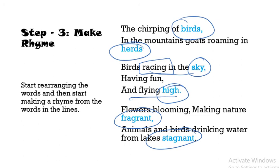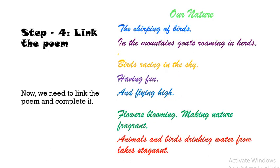The last and most important step is to link the poem. Once you have made your rhymes, the next very important step is to make a link between all the things. You can see a link through the whole poem — first you told about the birds, then moved to the mountains, then back to birds flying, then came the flowers, then the animals and birds drinking water. There should be a link throughout. Maintain the link between all the lines and choose a title for the whole poem.